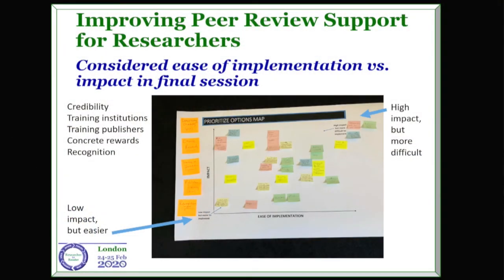From the voting, five priority areas were identified, then placed on a priority map looking at ease of implementation versus amount of impact. In credibility, there was discussion about checklists and indicators. There was a lot of discussion on training, particularly with early career researchers, on how librarians could help, on publisher-side training for using existing systems more efficiently, as well as some of the new journal-independent peer review approaches and Peer Community In. There was lots of discussion around rewards — including, notably, giving out wine and cake.